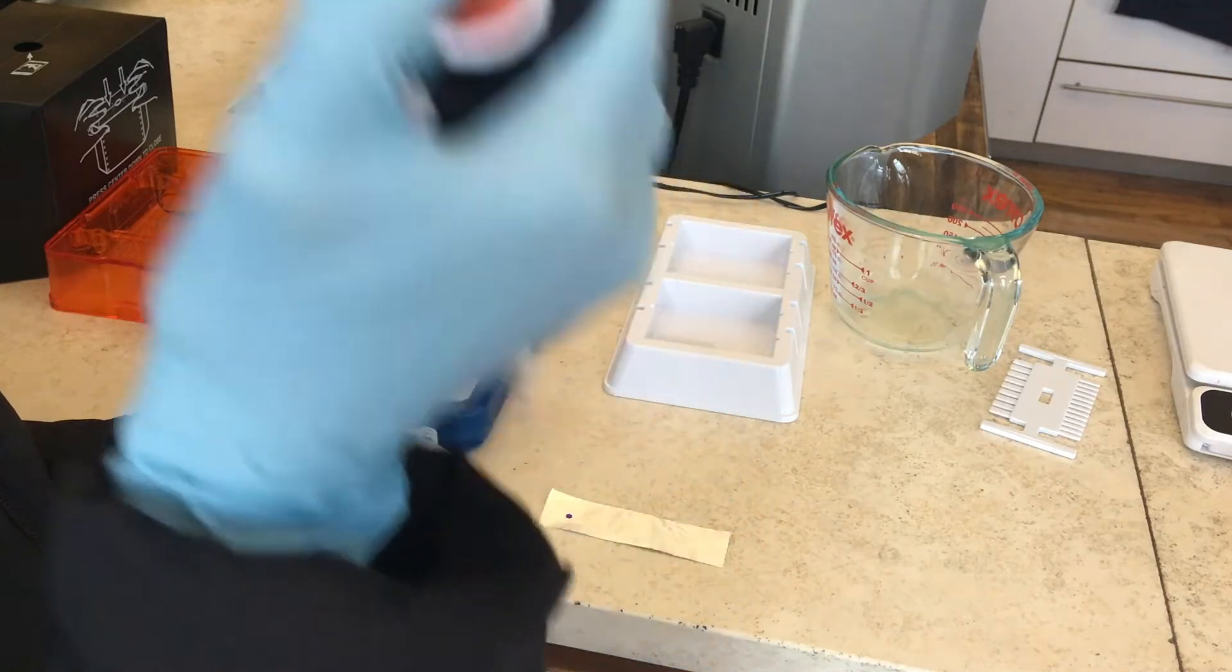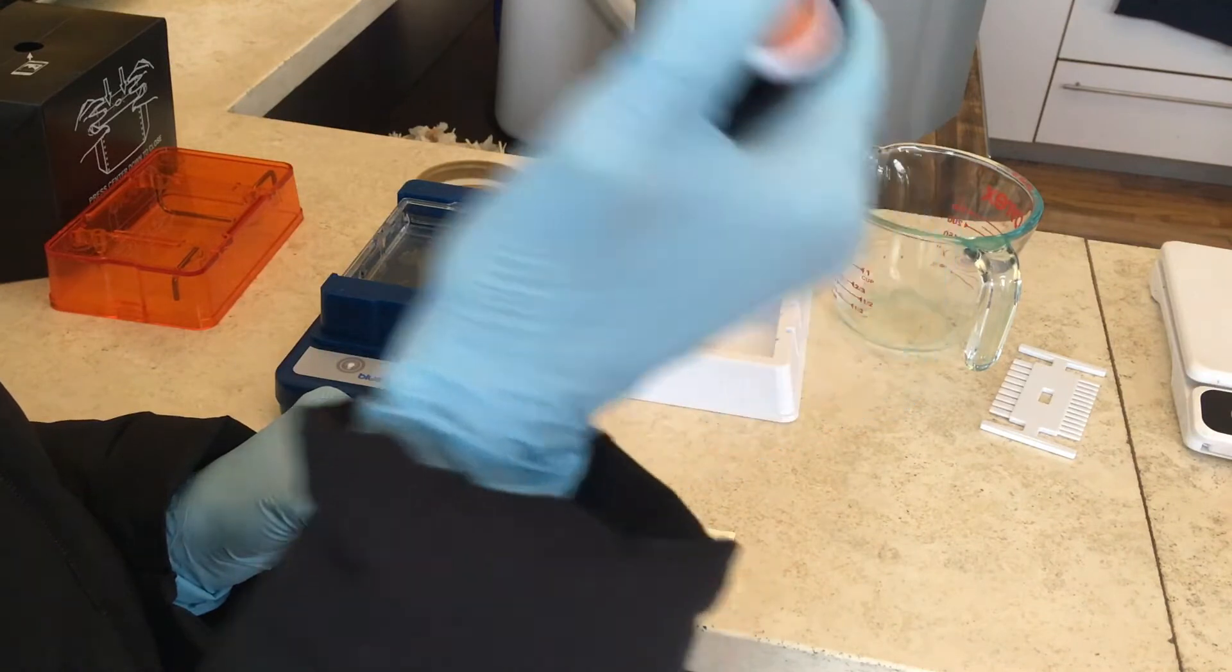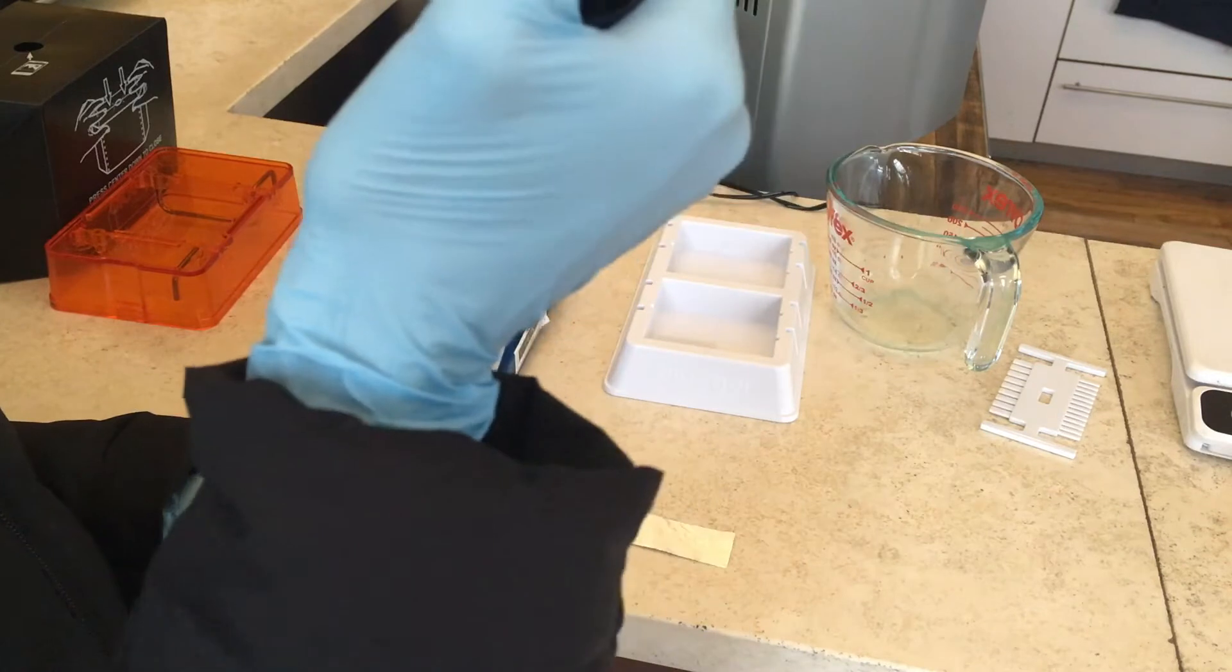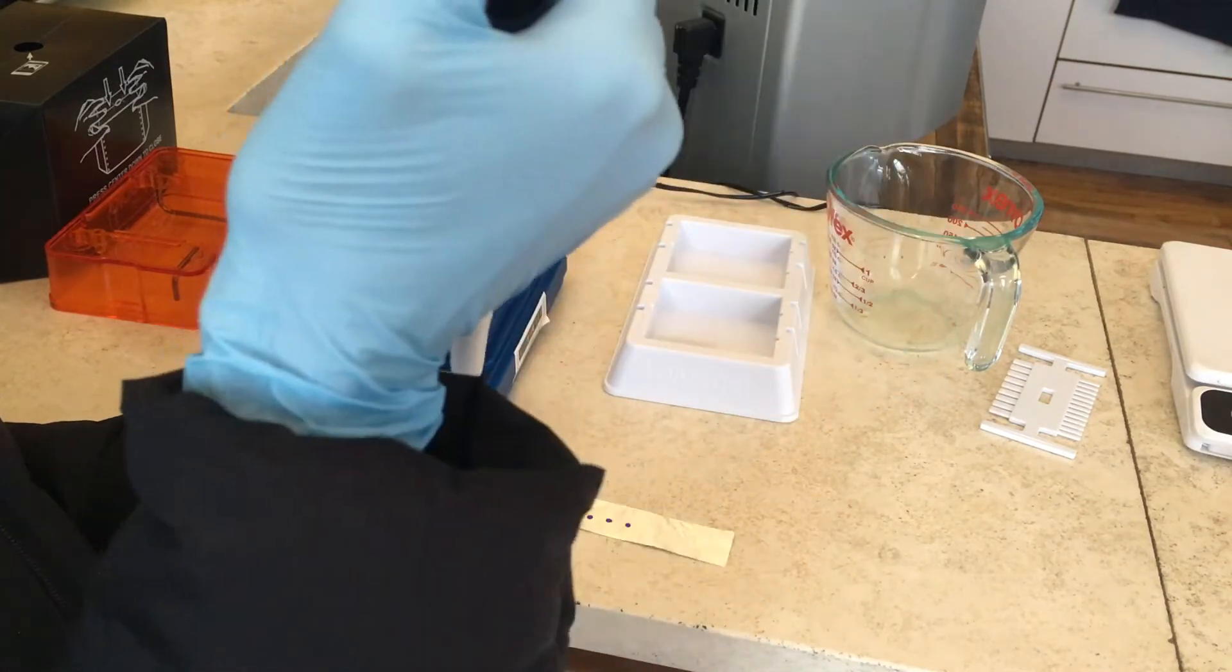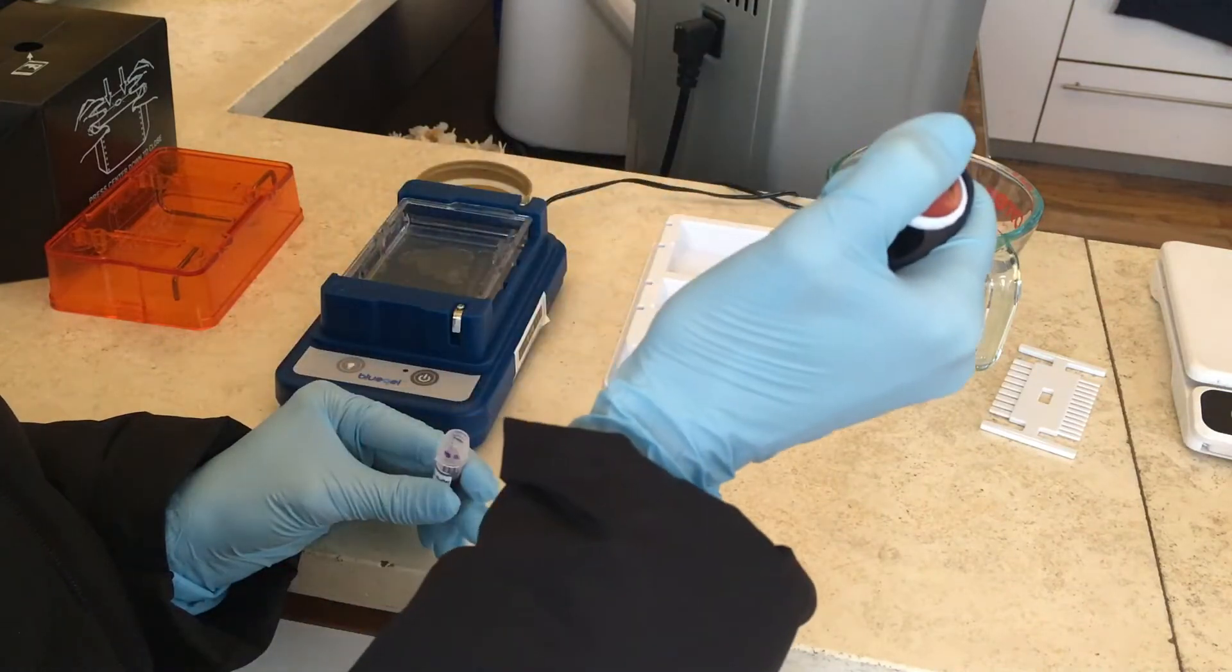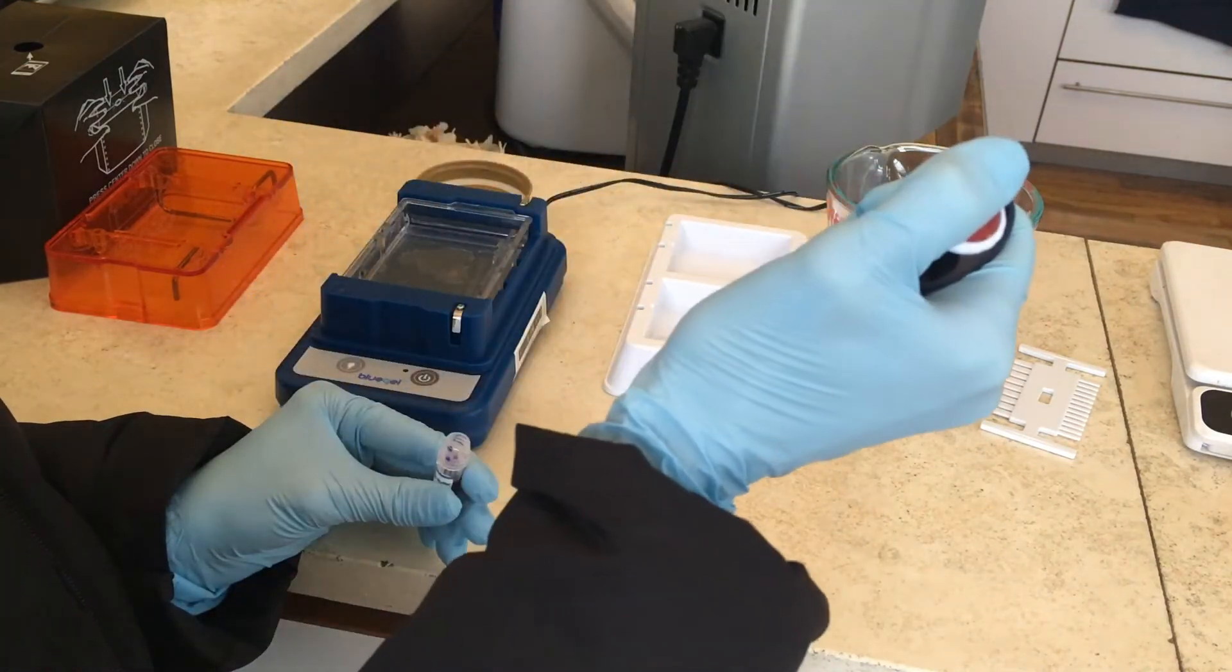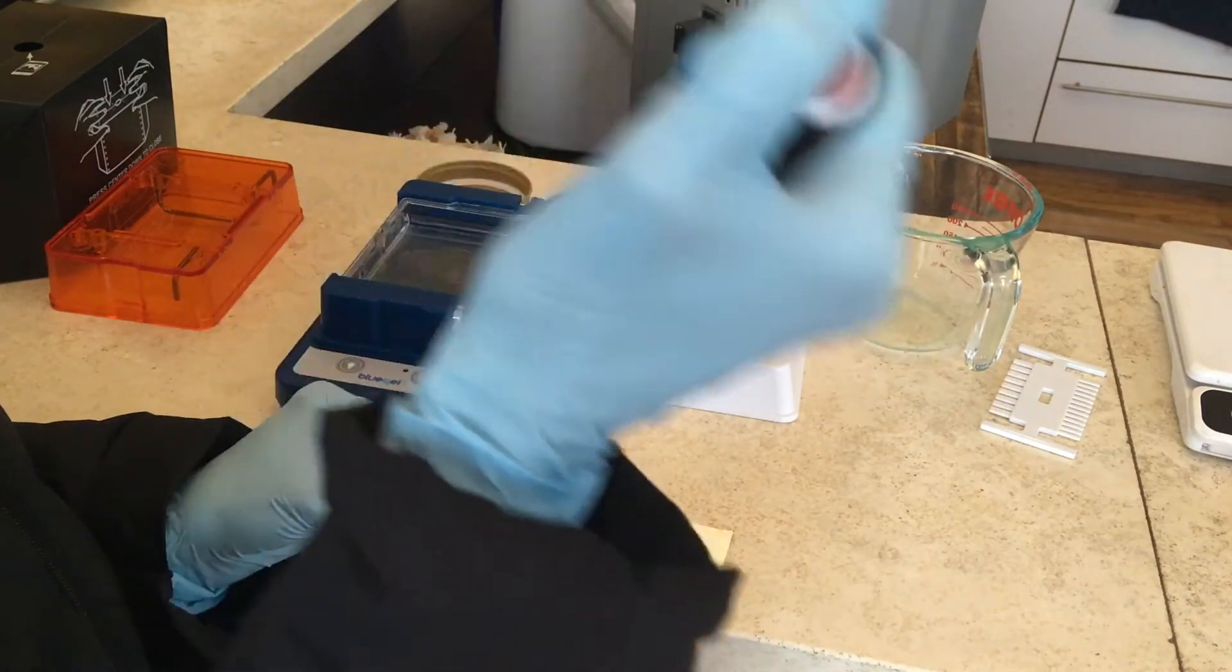The reason we're doing it like that is it's easier to mix the individual mushroom samples with the loading dye if we just do it drop by drop. So we're going to individually mix them on this piece of aluminum and then we're going to drop them into the gel. So we're going to do this eight times.